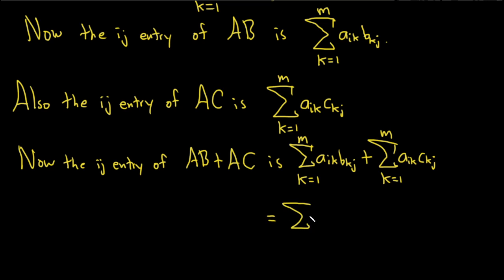So this is equal to the sum, as k runs from 1 to m, of aik bkj plus aik ckj.